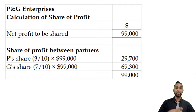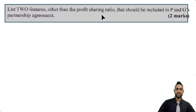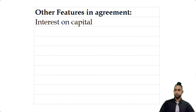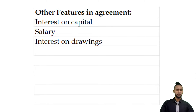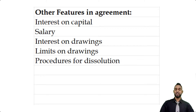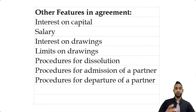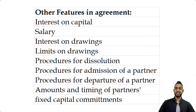Part C says: list two features other than the profit sharing ratio that should be included in P and G's partnership agreement. That list is a very long list, so I'll give you more than two. Think of your appropriation account — we could have interest on capital, salary, interest on drawings, limits on drawings, procedures for dissolution (figuring out how to pay back creditors and repay partners if any capital remains), procedures for admission of a new partner, procedures for departure of a partner, and the amount and timing of partners' fixed capital commitment.